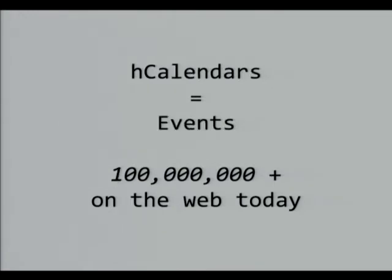Another popular microformat is the H-Calendar format. This is about events, meetings, concerts — any event. Again, we've seen a lot of traction there with over 100 million H-Calendars formatted on the web today. And it's these two microformats that we focus on with Oomph.